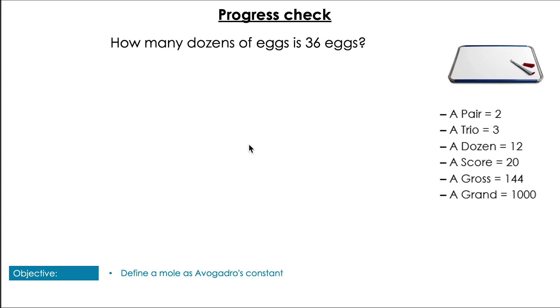Let's keep it going. How many dozens of eggs is thirty-six eggs? Pause the video and give yourself a moment for that. Pop them up! Yes the answer is of course three. All you have to do is thirty-six divided by twelve which is the number of eggs in a dozen and you get three.